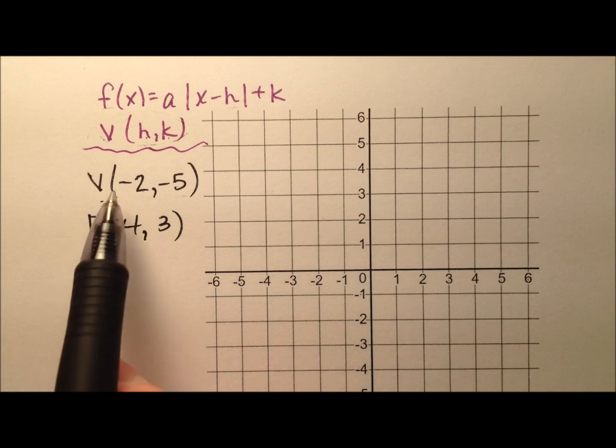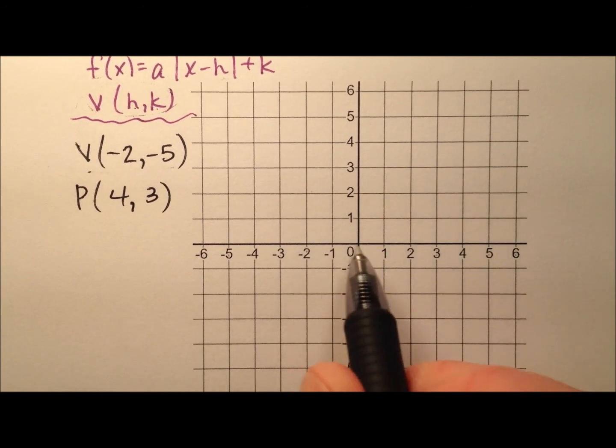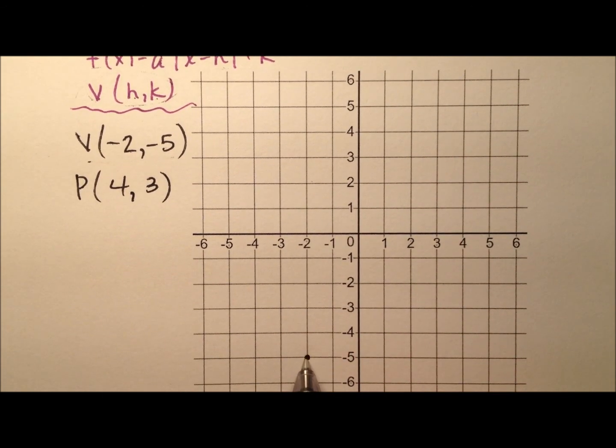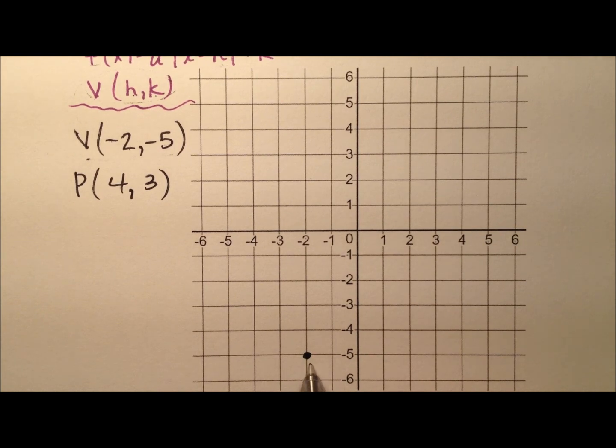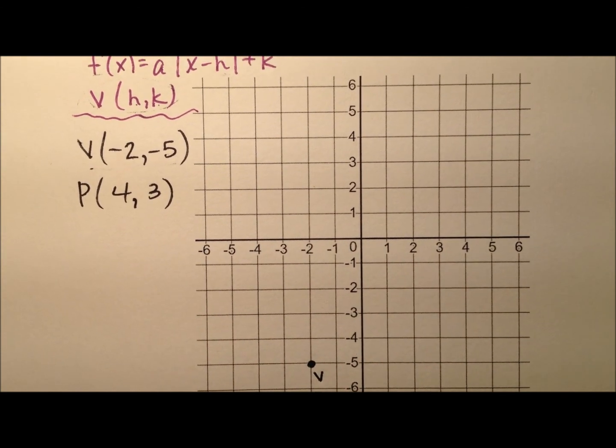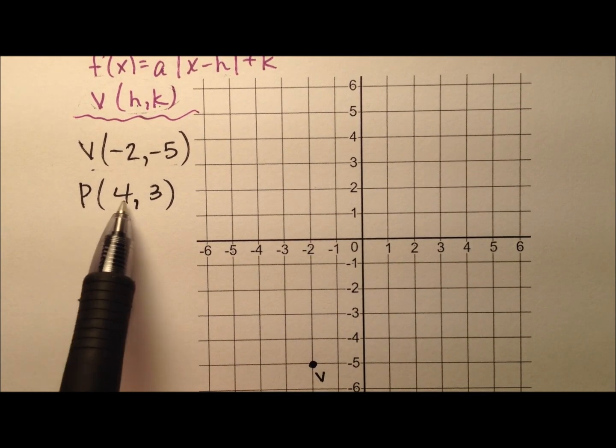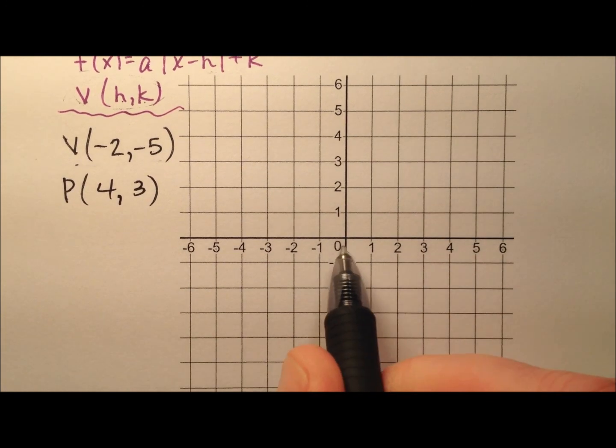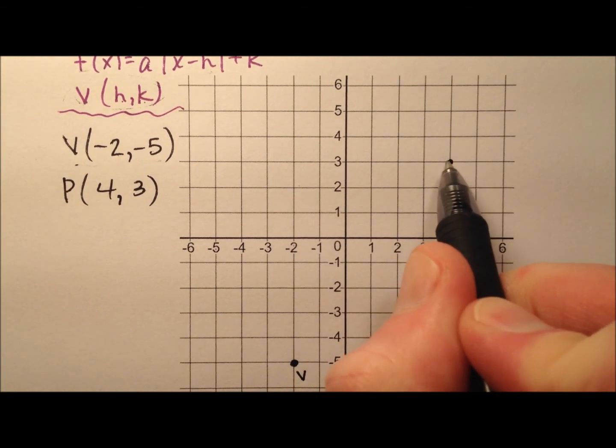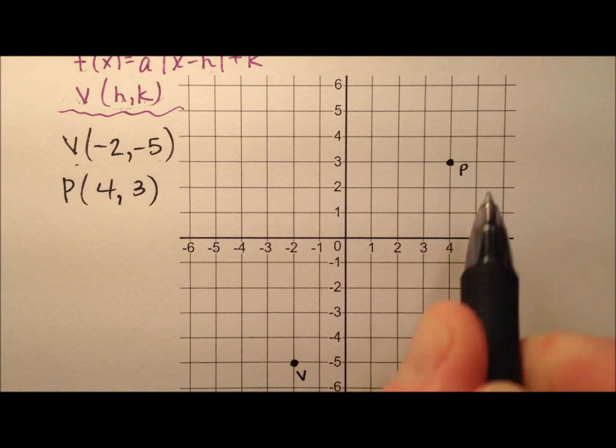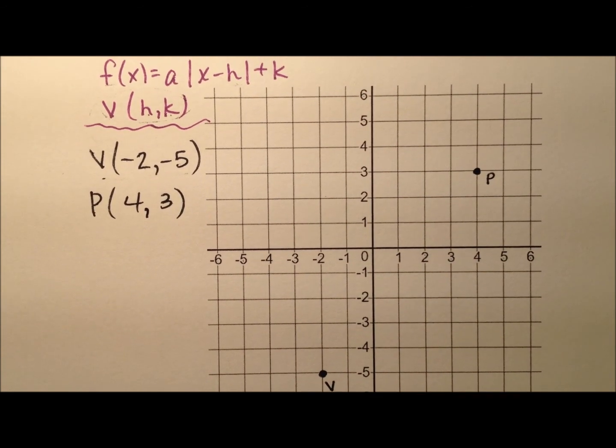So let's go ahead and graph these two points. V is (-2, -5), so right down here, let's go ahead and label that V. And the other guy is (4, 3), so we'll label him right there.